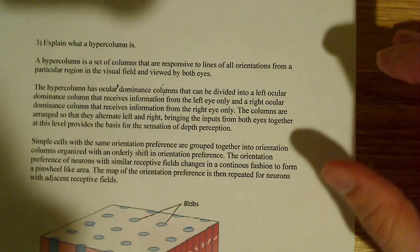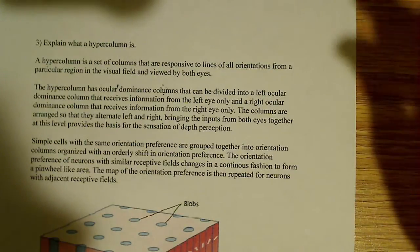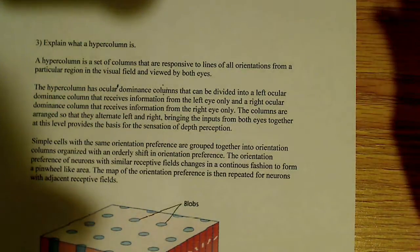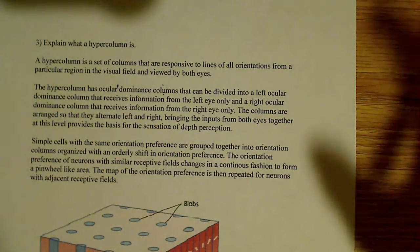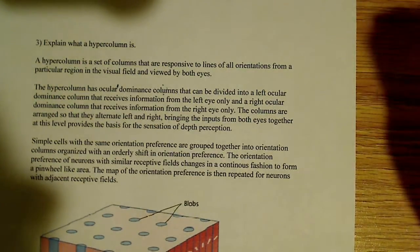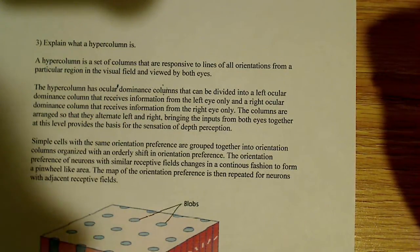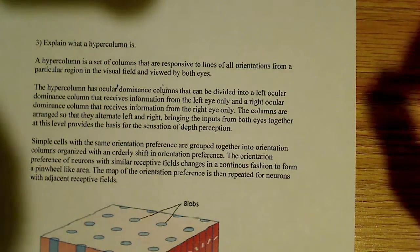And by alternating left and right, the columns are arranged so that they alternate left and right, bringing the inputs from both eyes. So what they do is they bring the inputs from both eyes together. At this particular level, it winds up providing the basis for the sensation of depth perception.